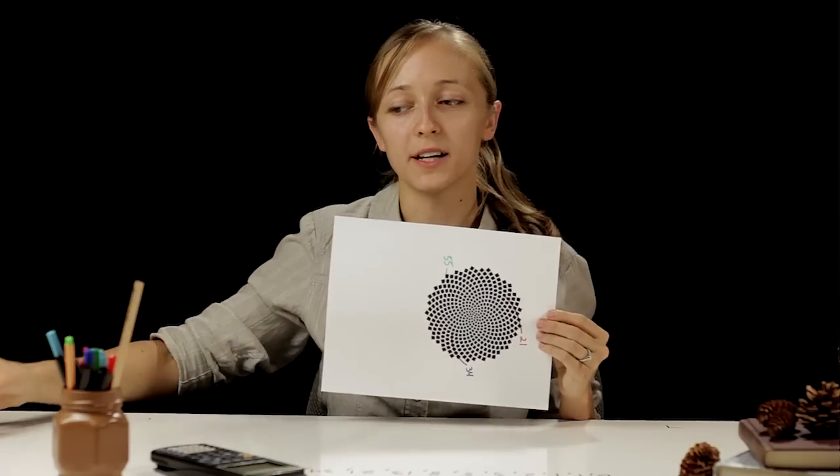Another way that Fibonacci numbers appear in nature is in the way animals reproduce, like rabbits and honeybees. For example, if a female honeybee lays an egg and it is unfertilized, then a male will hatch. So each male bee has only one parent. If the egg is fertilized, then a female will hatch. So all female bees have two parents.